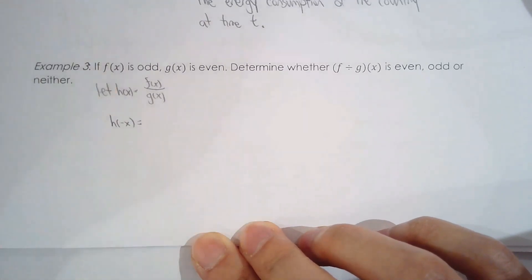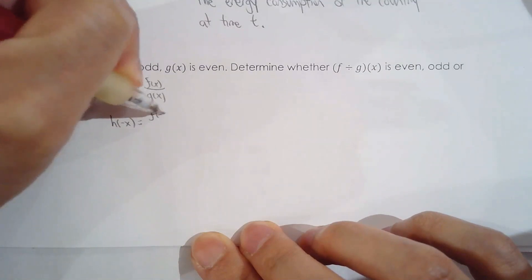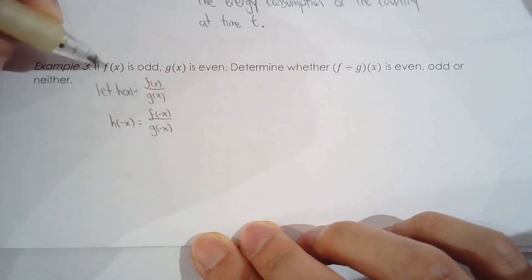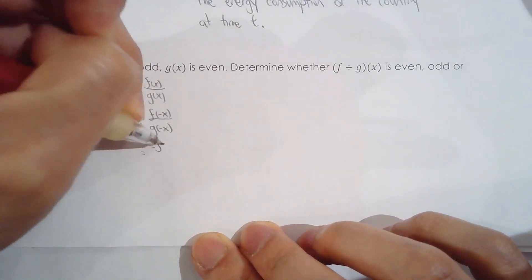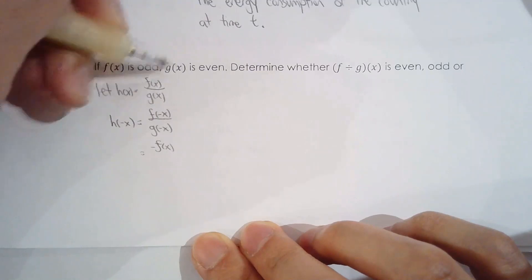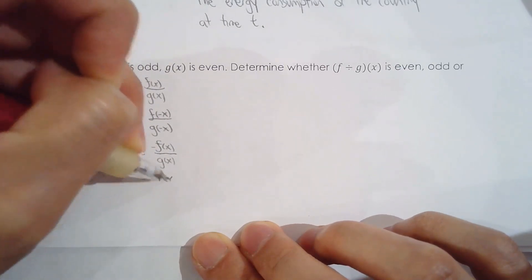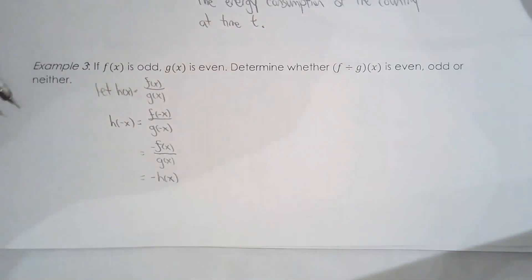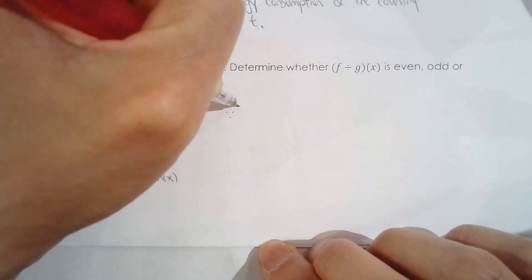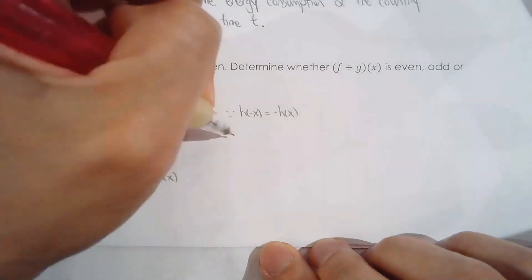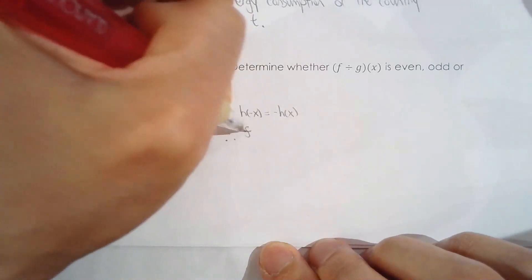Now, h of negative x equals f of negative x over g of negative x. Since f of x is odd, f of negative x equals negative f of x. Since g of x is even, g of negative x equals g of x. Simplifying, this equals negative f of x over g of x, which equals negative h of x. Since h of negative x equals negative h of x, therefore the quotient f over g is odd.